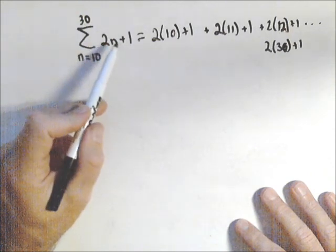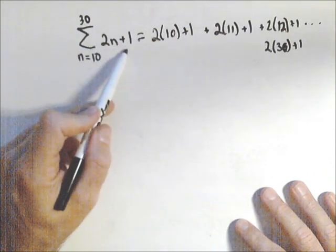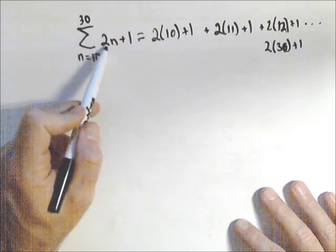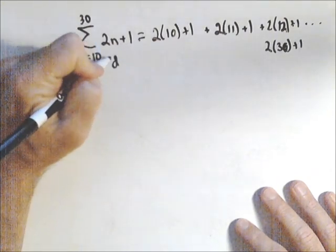I notice that my nth term here is linear. That means it's going to be arithmetic with a common difference of 2. So that's my d.